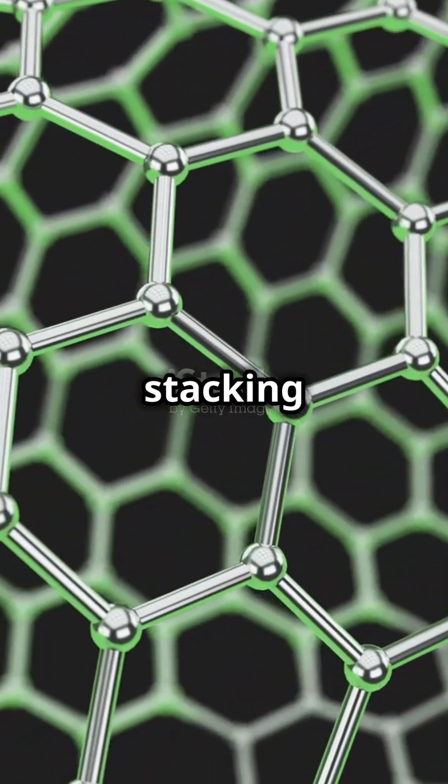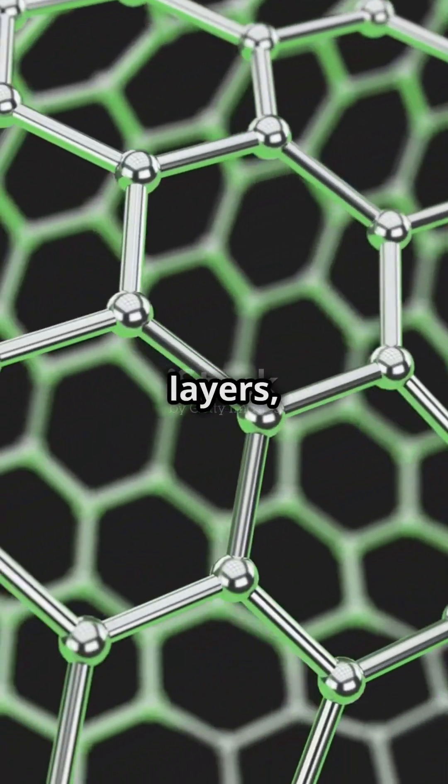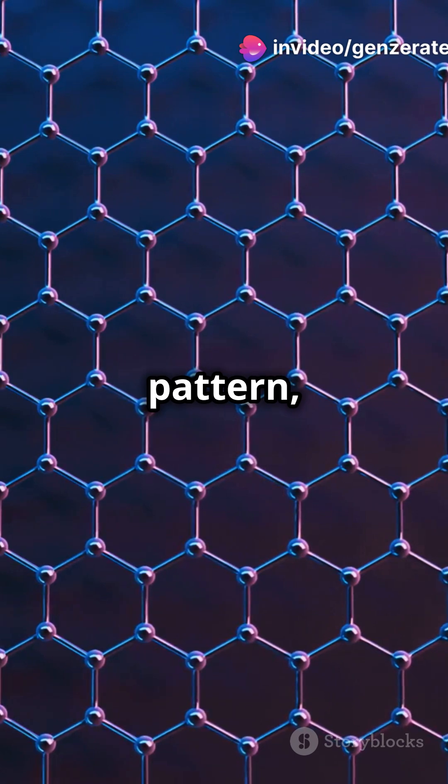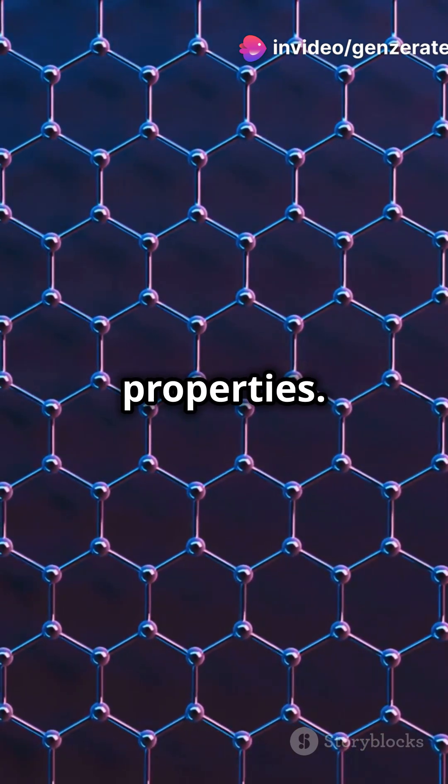Moiré materials are made by stacking and twisting two 2D layers like graphene. This twist creates a moiré pattern, transforming their electronic properties.